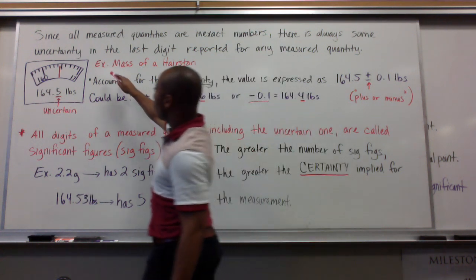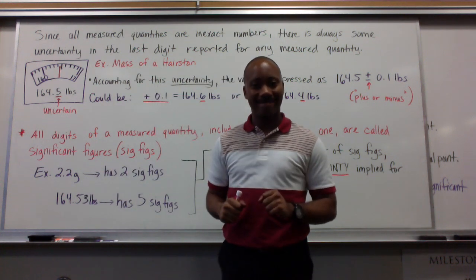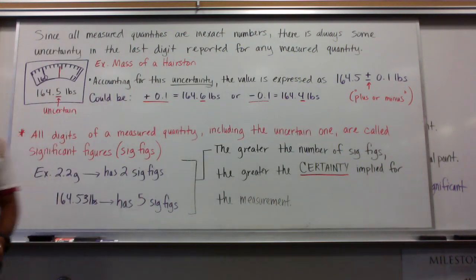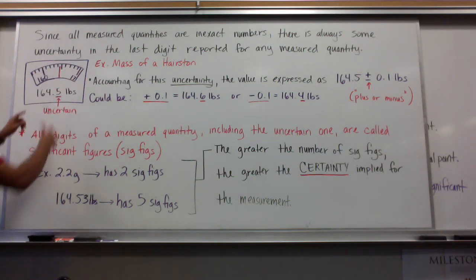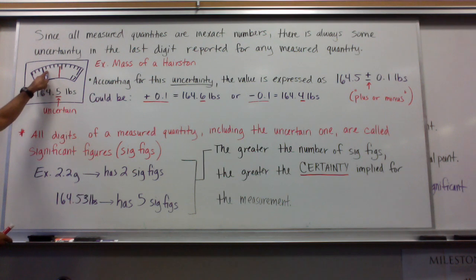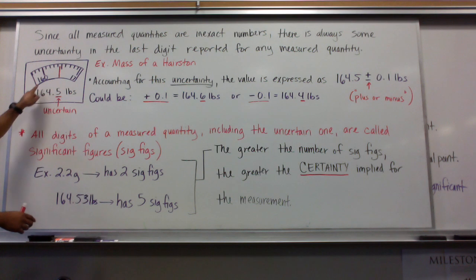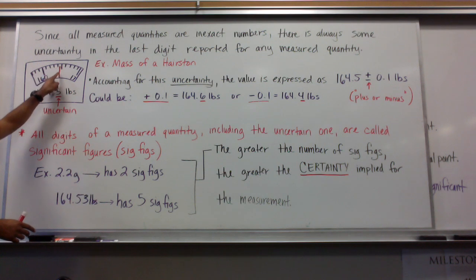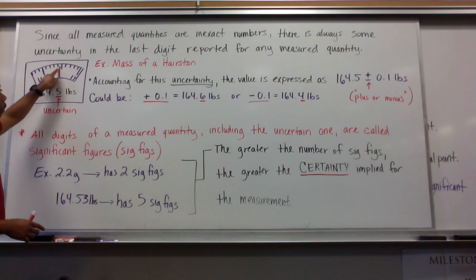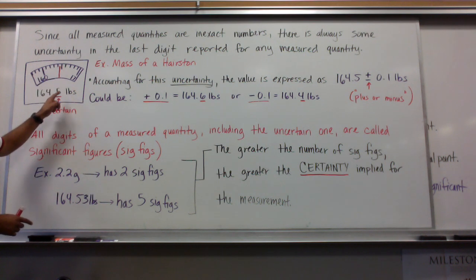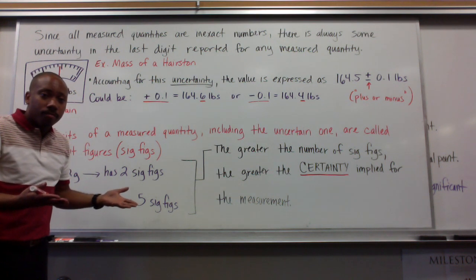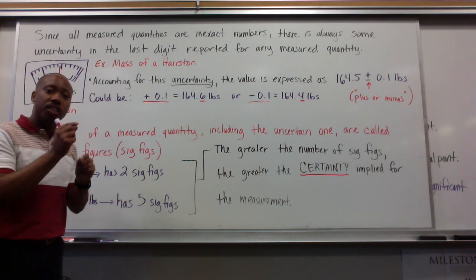For example, let's say we're going to take the mass of a Hairston — me. Now, look at my scale here. If I were to step on the scale, it would read 161, 162, 163, 164. This red dial here is where the reading is for my weight. So I'd be 164, and this red needle here is right somewhere in the middle. It's uncertain.